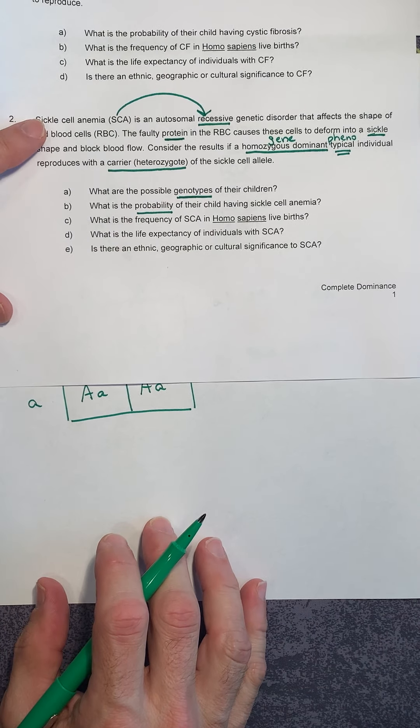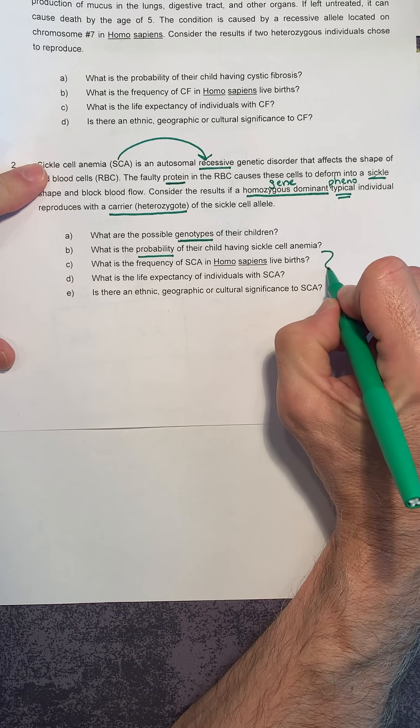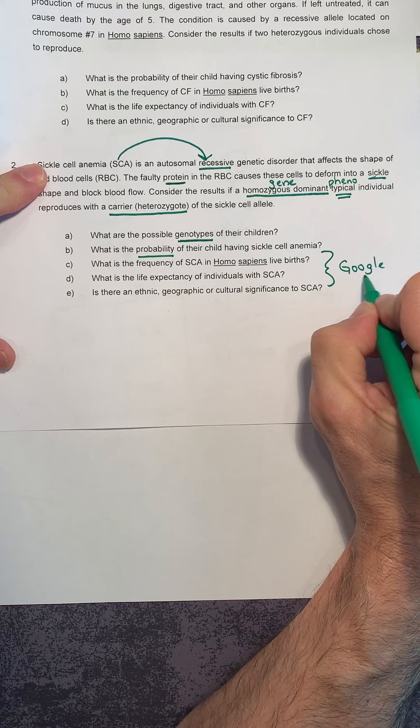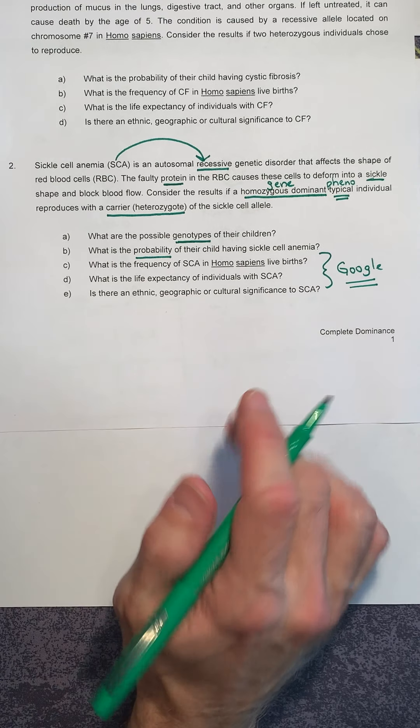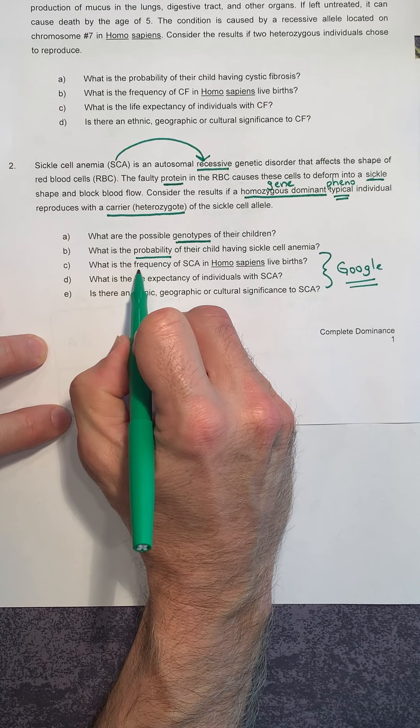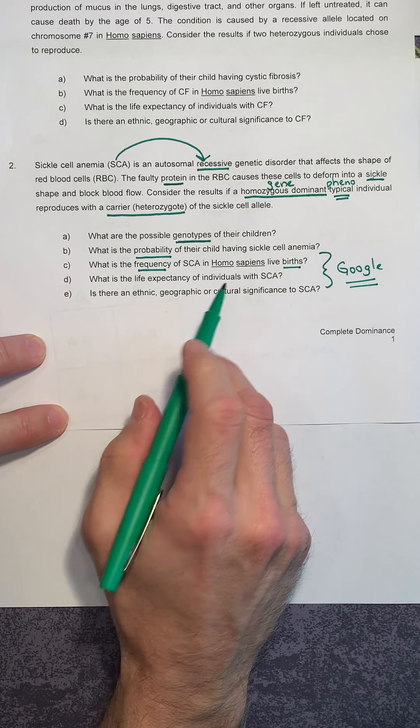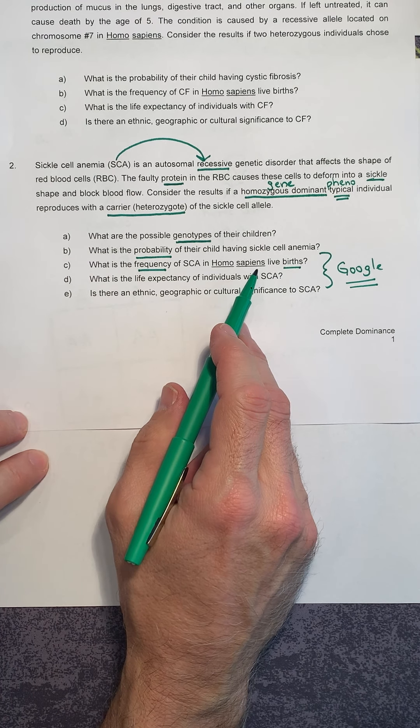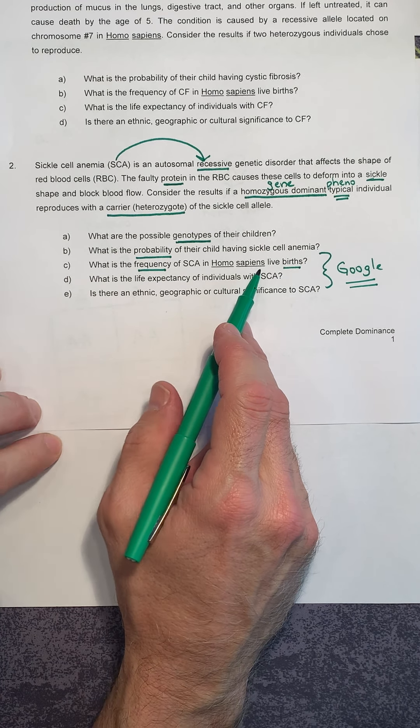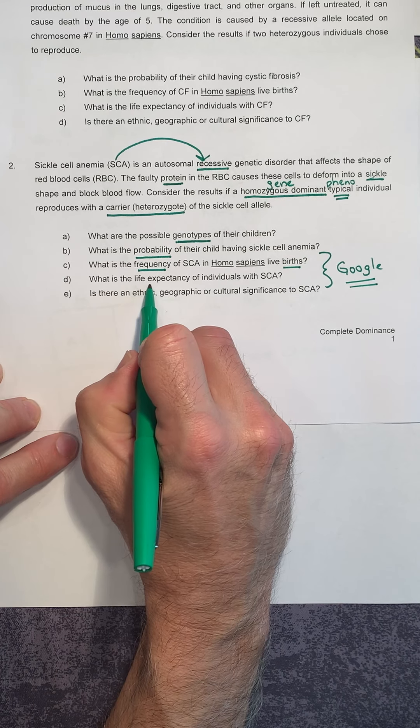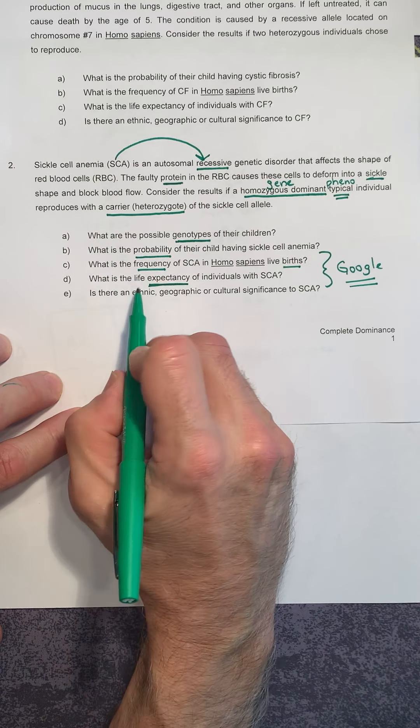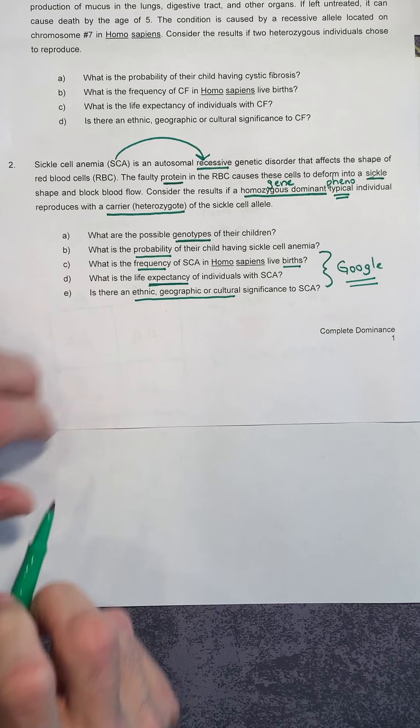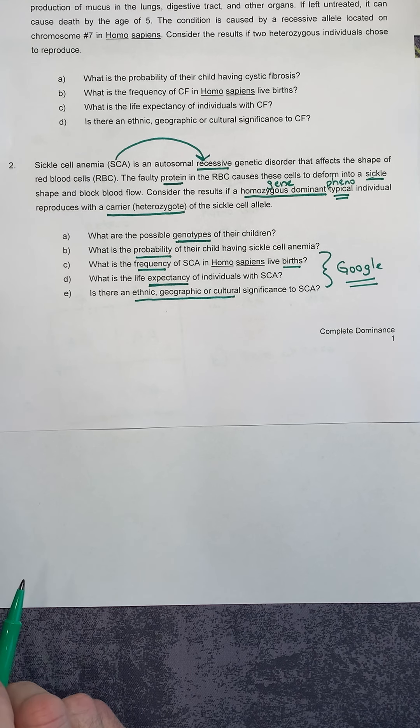Now, part C, D, and E, this is where you are going to jump into Google and find out the details of sickle cell. This has its roots in Africa, Central and Northern Africa. You'll see. So how often do you see sickle cell in live births? This data is going to be different in the United States versus Africa. This allele is carried much more often in people of African descent. Then D, what's the life expectancy? Do these people die as children? Do they live a full life? Let's look this up. And then I was just talking about this. Is there an ethnic, geographic, or cultural significance to sickle cell? Absolutely.